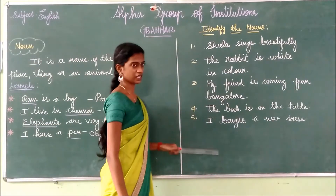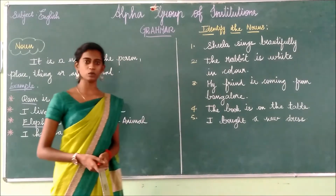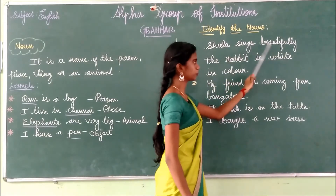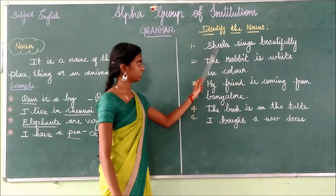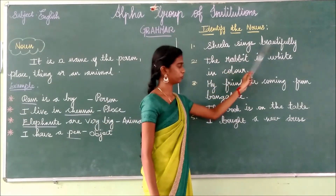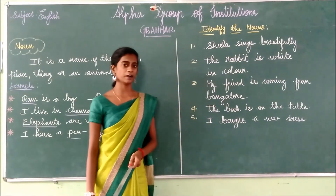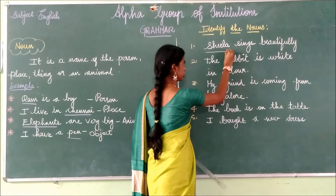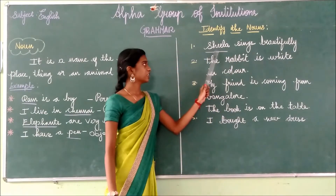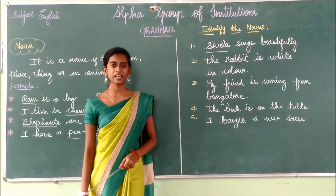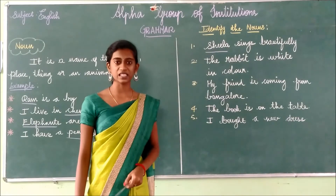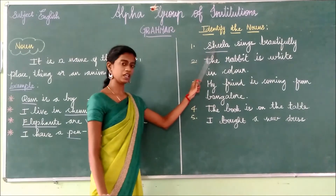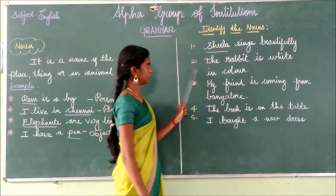Look at here. I have given you five sentences. Shall we identify the nouns in the sentence? The first sentence is: Sheila sings beautifully. What is the noun here? Very good. The noun is Sheila, because this word Sheila indicates the name — it indicates the name of a particular person. So Sheila is a noun.